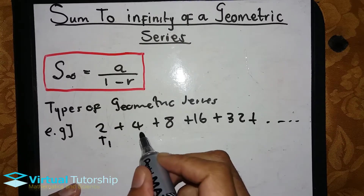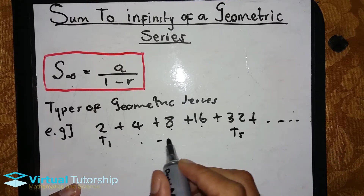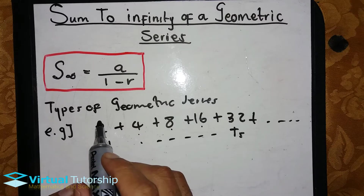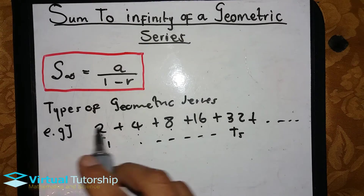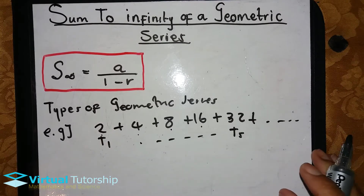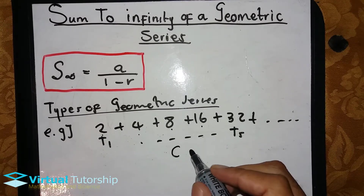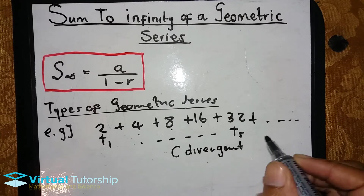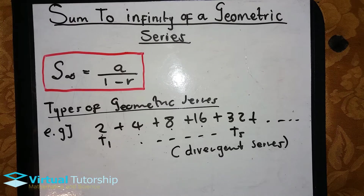So we have T1, T2, T3, T4, T5, all the way up to T5 — from T1 all the way up to T5. This type of geometric series is a divergent series. A divergent series is difficult to calculate.